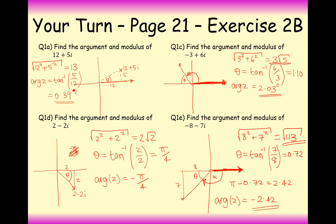The symbol we use for modulus is z between two vertical lines. That's the answers to exercise 2b. Please go ahead and practice more questions from exercise 2b — persevere through the difficult ones and follow each step carefully. Don't rush and try to spot shortcuts by quadrant; just follow the diagram and the instructions. Thanks very much for watching.